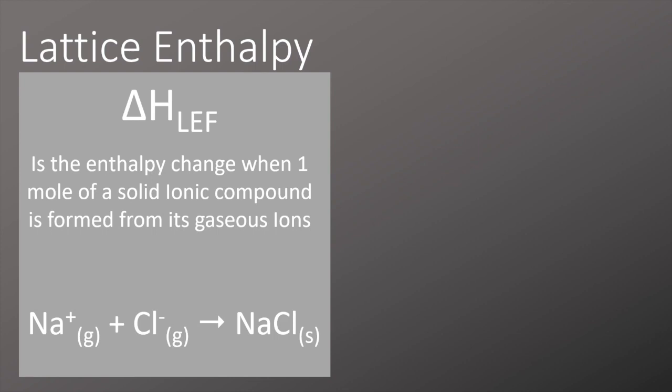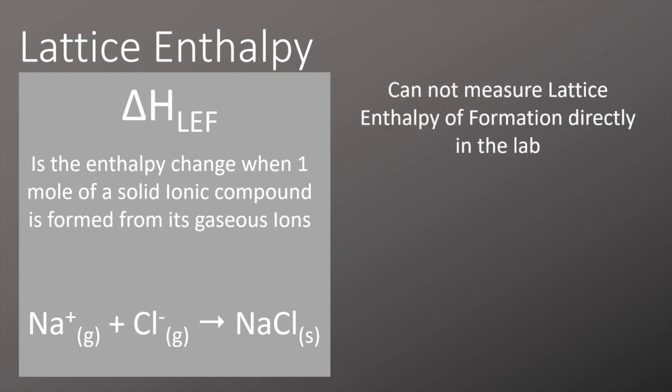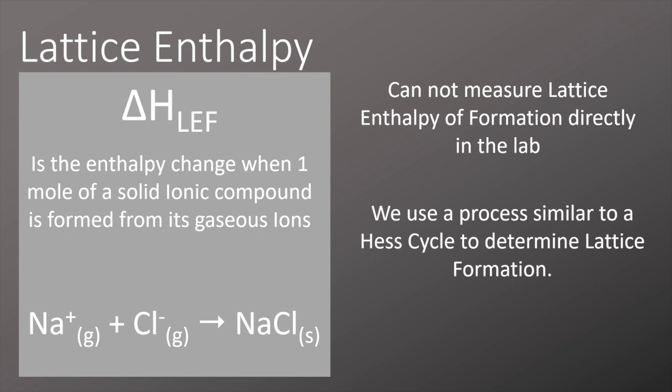These Born-Haber Cycles are often used to find out the lattice enthalpy. We can't measure that lattice enthalpy directly in the lab. We can come to a calculation by compiling lots of other experimental data, and we use a process very similar to a Hess cycle to determine that. That is actually called a Born-Haber Cycle, and we're going to take a look at those in more detail today.